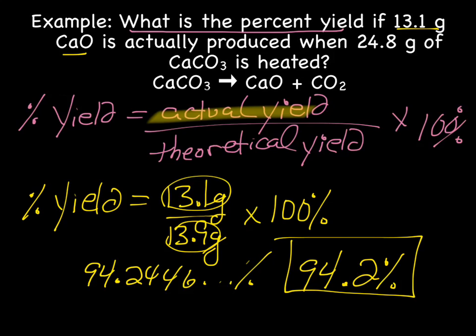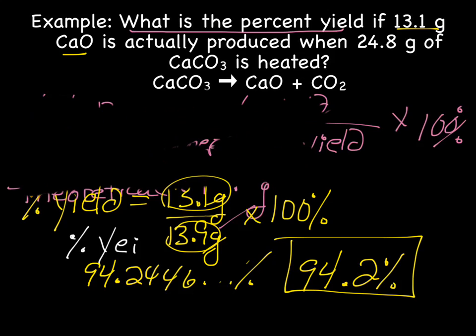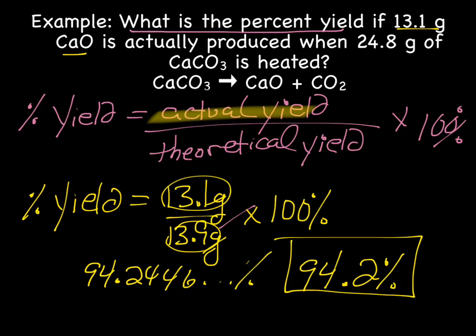So in a perfect world, the amount that we thought we should make would be the same as the amount we actually did make, and we would have 100%. World's not normally perfect, so we ended up with what we call a 94.2% yield.